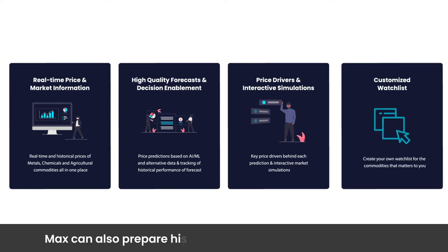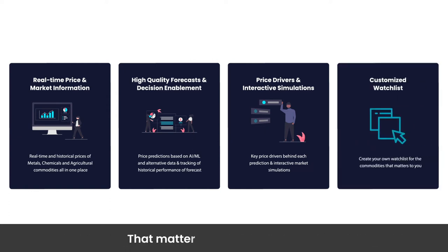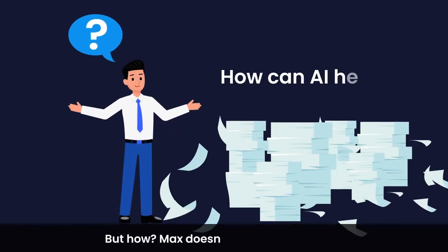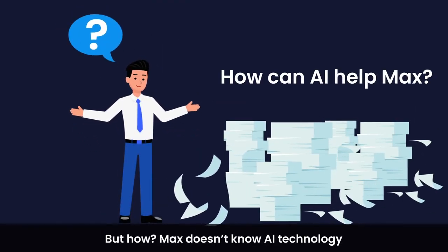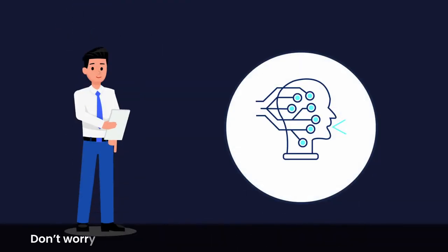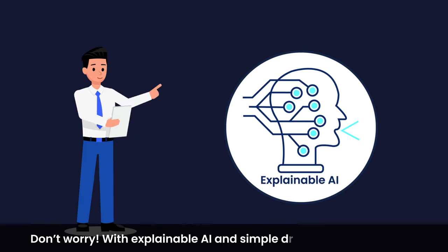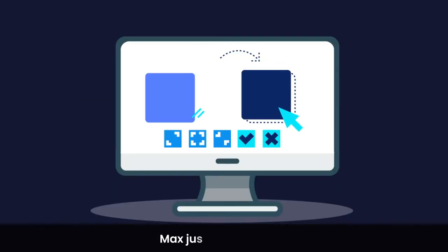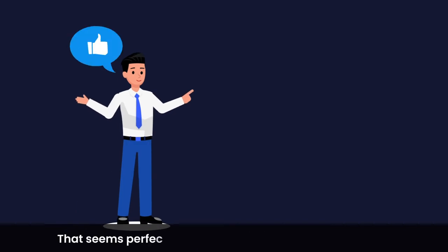Max can also prepare his customized watch list of commodities that matter to him and set alerts. But how? Max doesn't know AI technology. Don't worry — with explainable AI and a simple drag-and-drop interface, Max just needs to click. That seems perfect to Max.